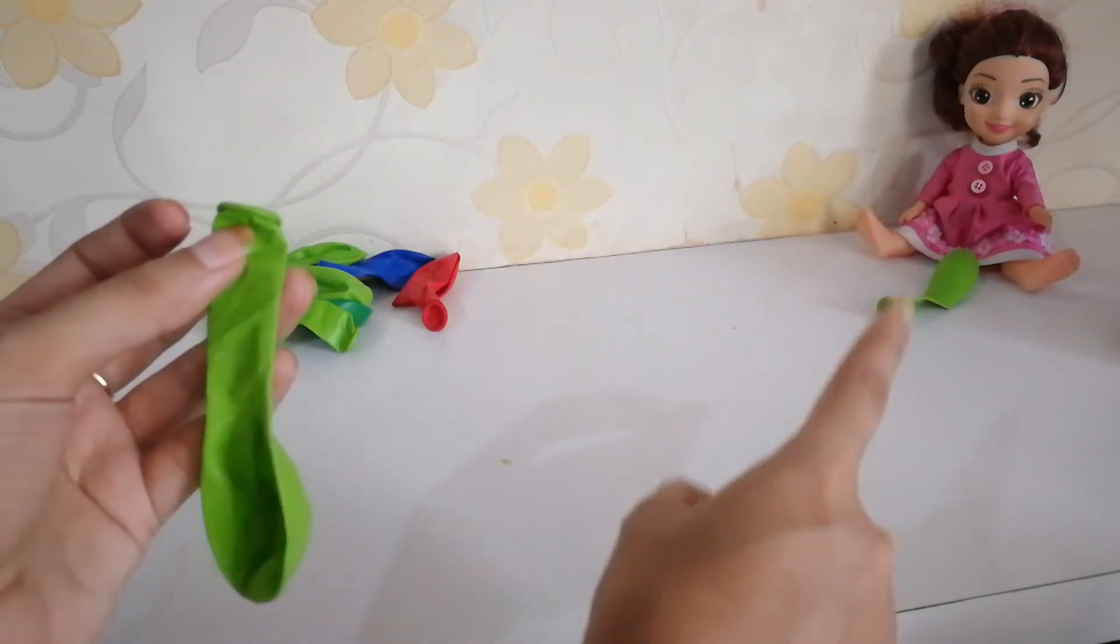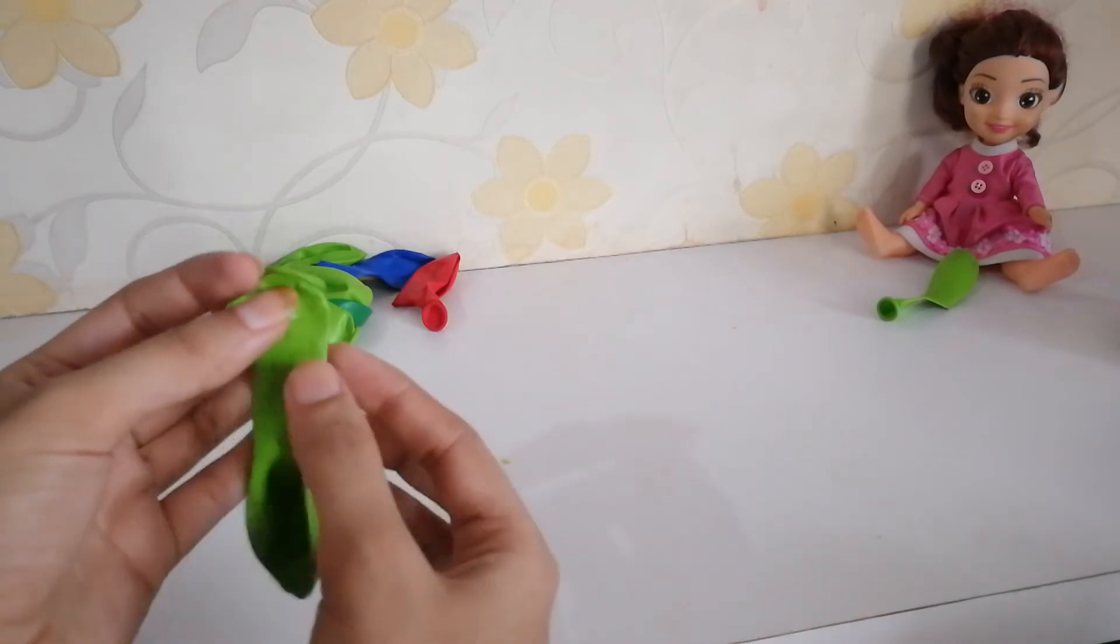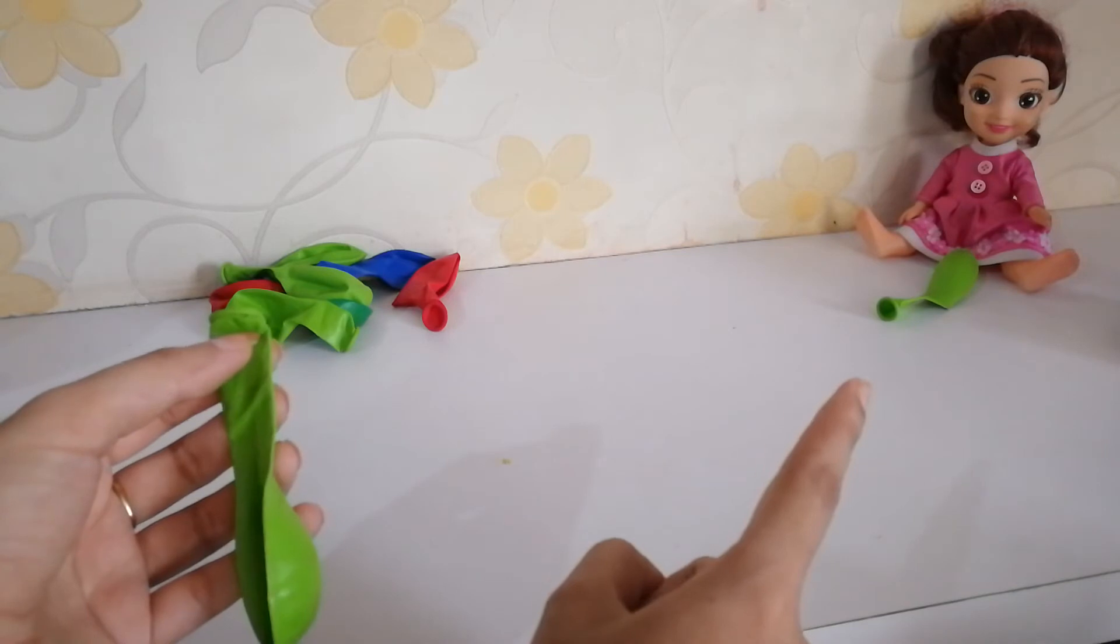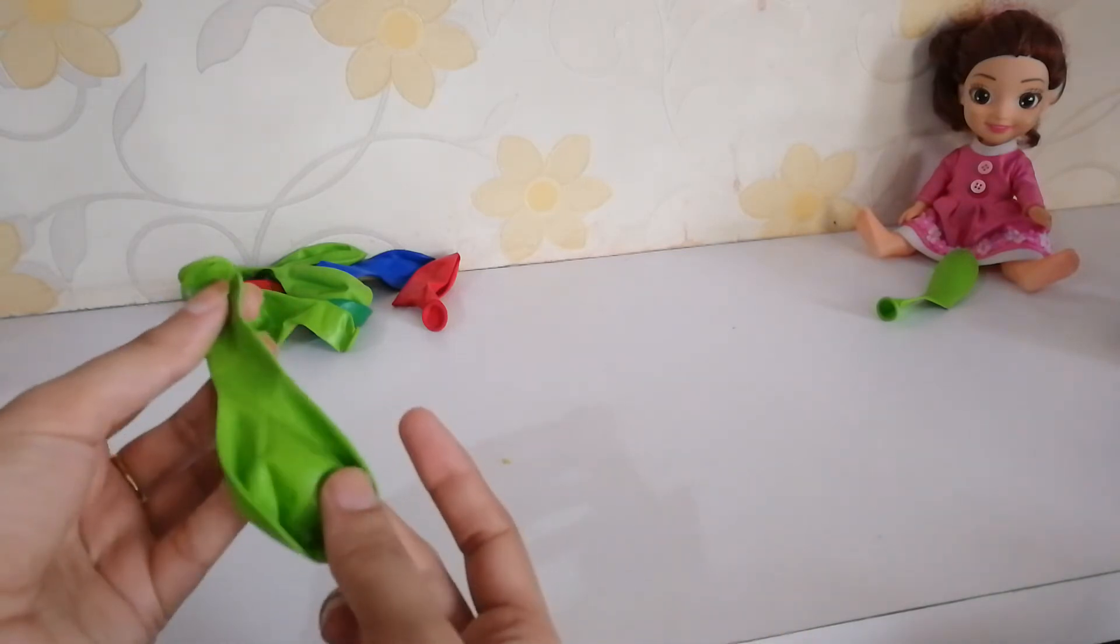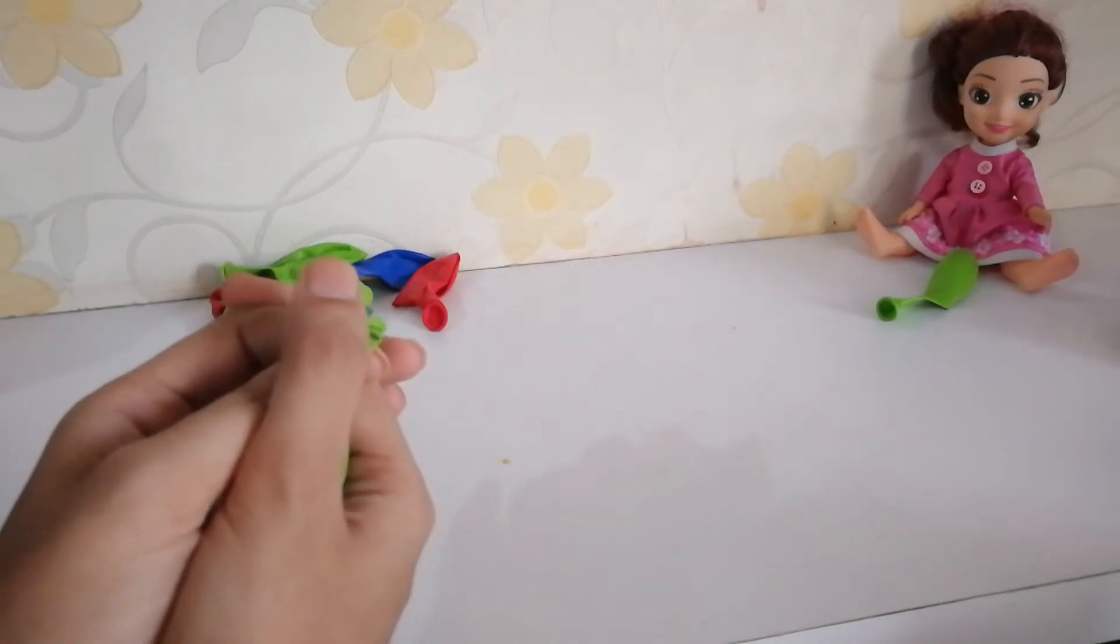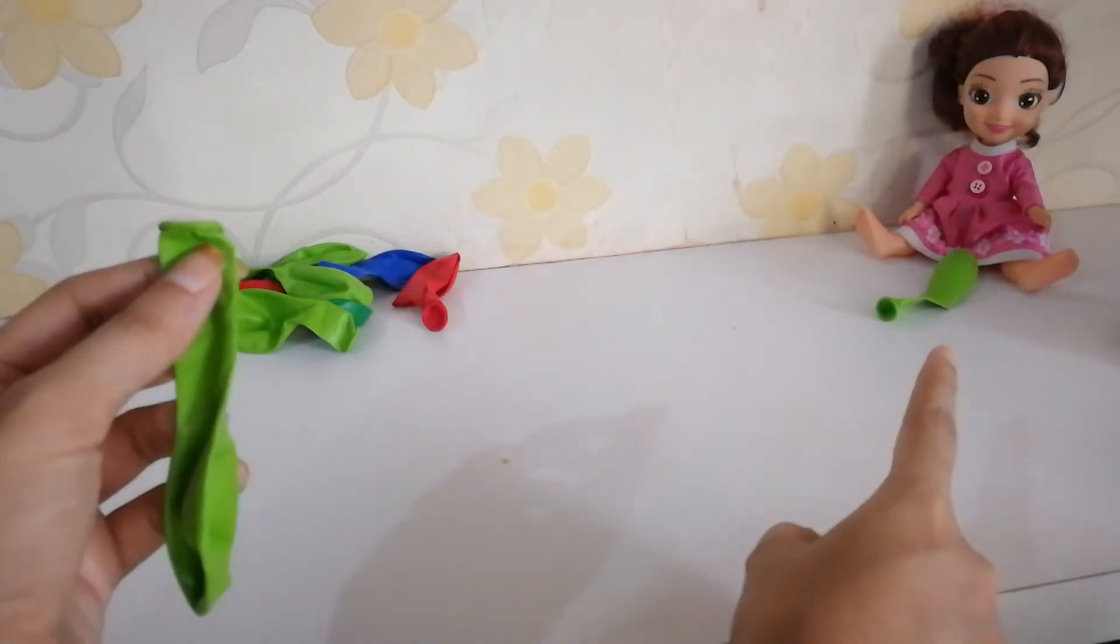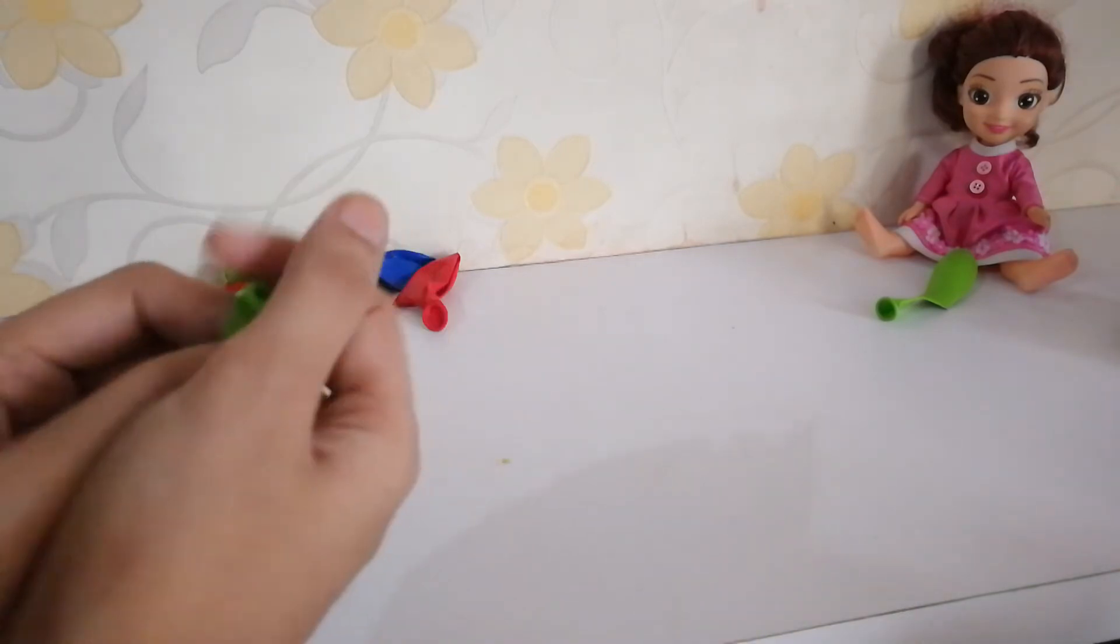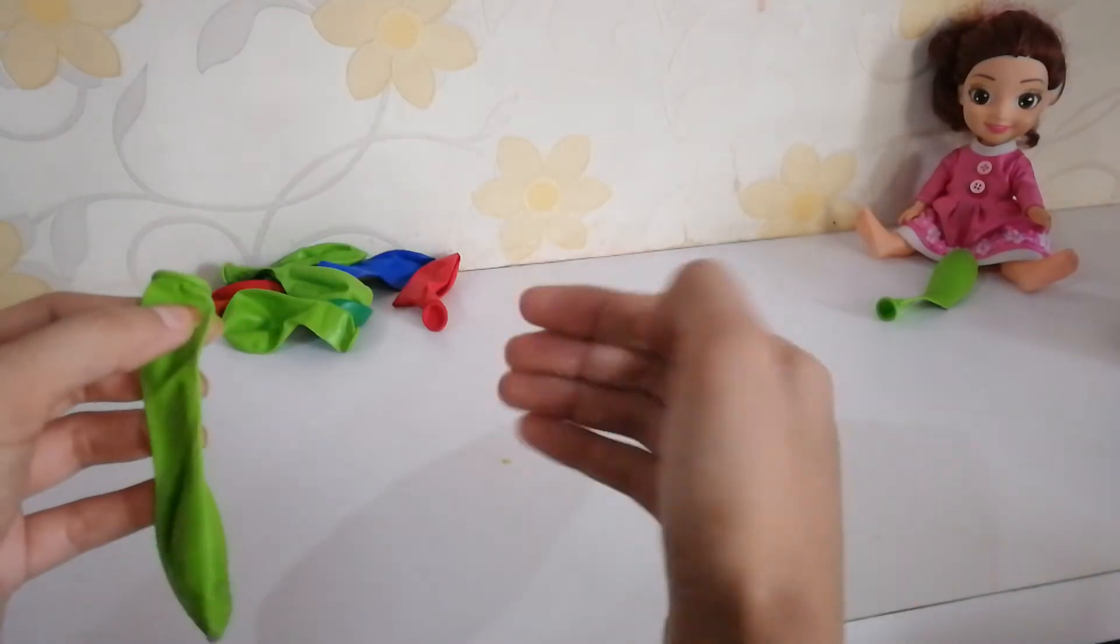This and that. Now children, do you know where to use this and where to use that? This use karenge when the thing is near to us, close to us. And that use karenge jab koi cheez hai far. This near, that far.